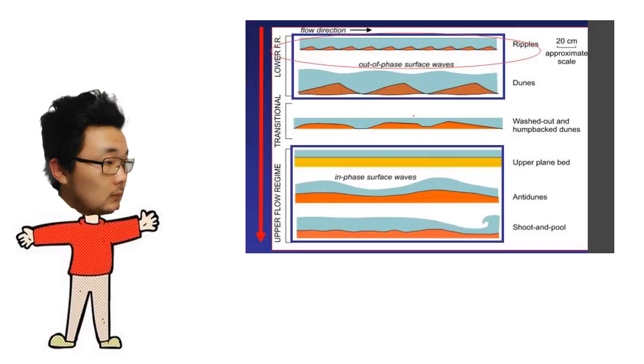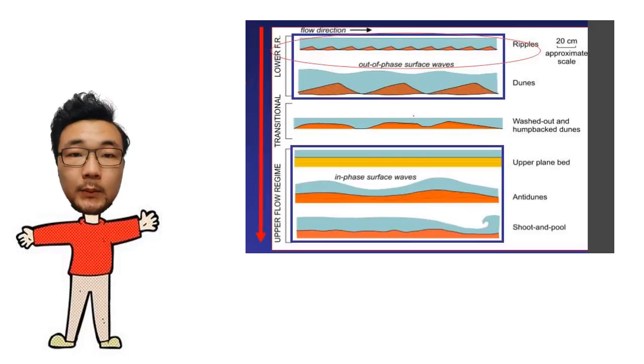Wavy bedding marks the boundary between flasor and lenticular bedding as well. Overall, wavy bedding should be located in the lower flow regime diagram.